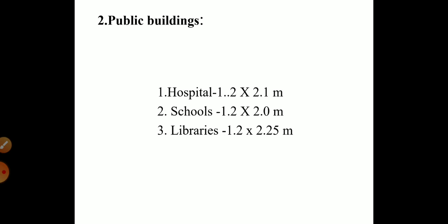For public buildings: if there is a school, the size of the door is 1.2 × 2.1 meters. If there is a hospital, the size of the hospital door is 1.2 × 2.1 meters. If there is a library, the door height should be 1.2 to 2.25 meters.